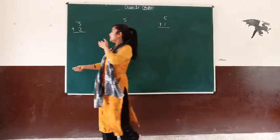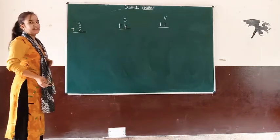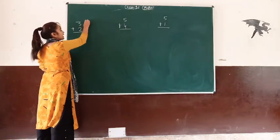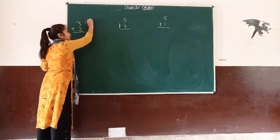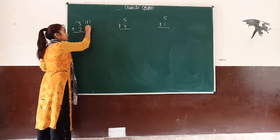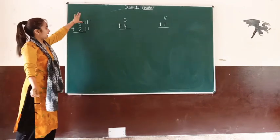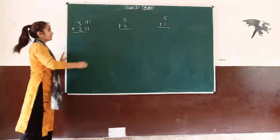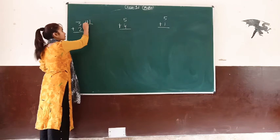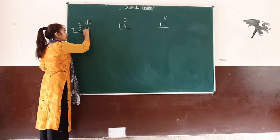The first one is 3 plus 2. Now we have to go to the diagram. We have 3 lines: 1, 2, 3. Then 2 lines: 1, 2. I am going to go to the 3 lines and count: 1, 2, 3, 4, 5.